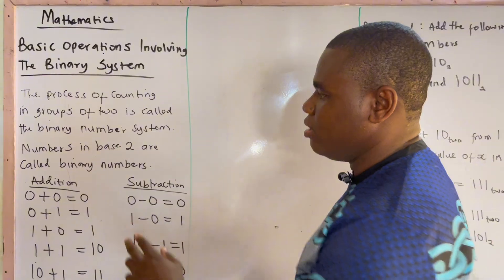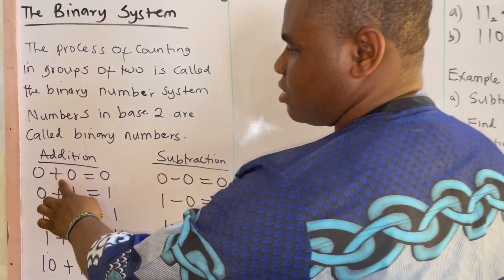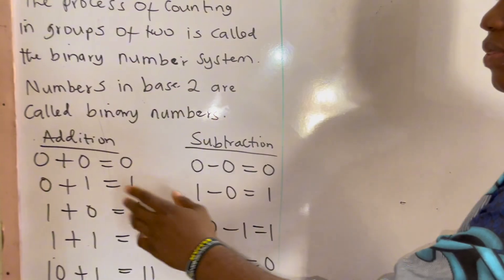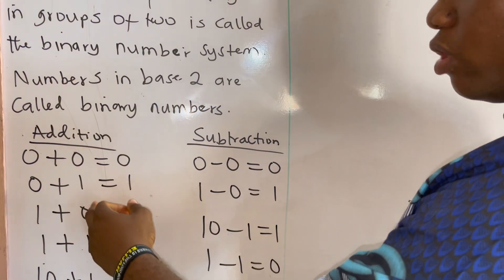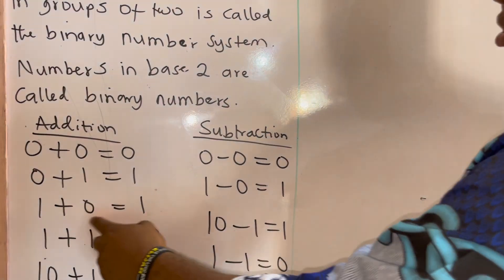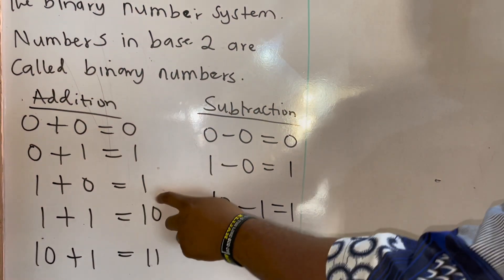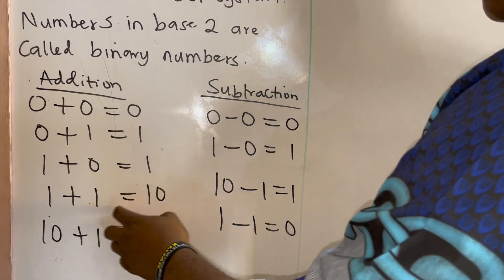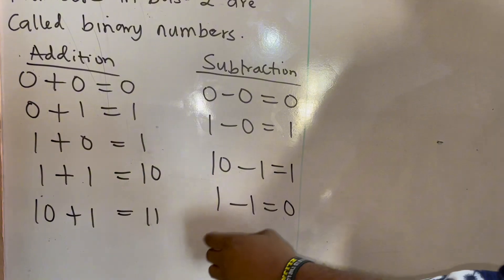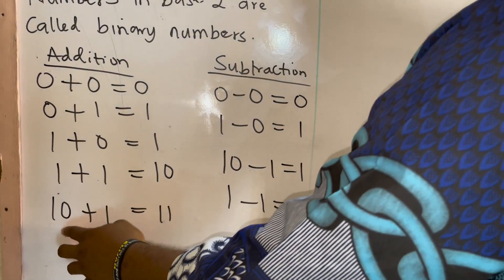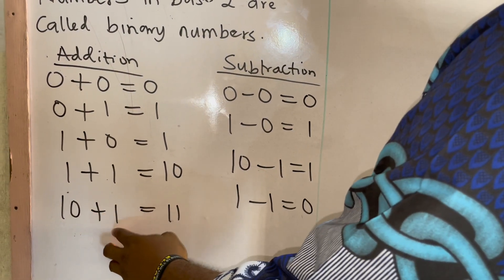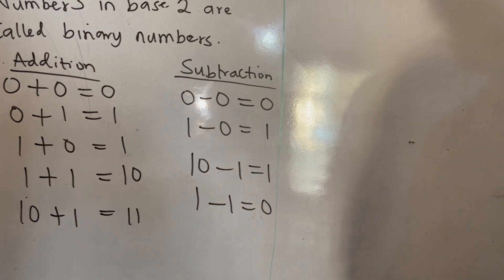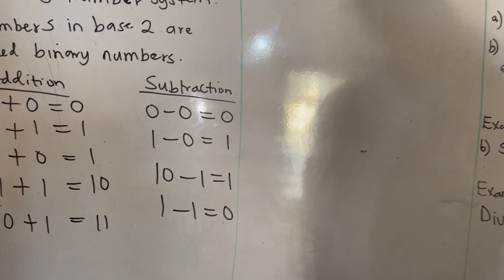For addition: 0 plus 0 equals 0; 0 plus 1 equals 1; 1 plus 0 equals 1; 1 plus 1 equals 1 0 (i.e., write 0 carry 1). And 1 plus 0 plus 1 equals 1 1, all in base two.